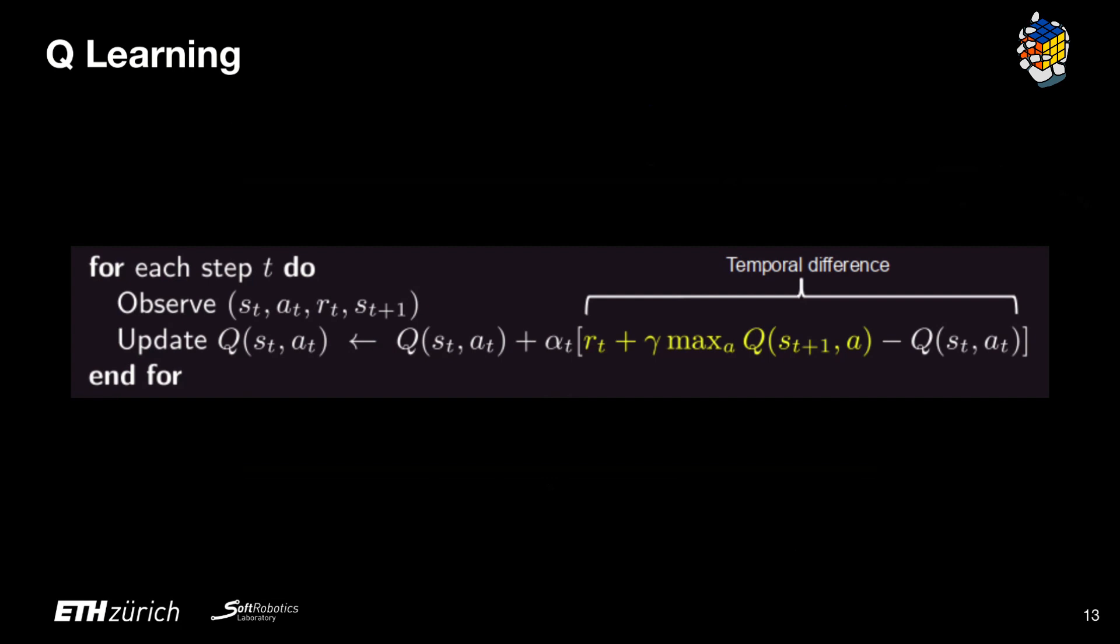This algorithm is defined as an off-policy algorithm since it allows to firstly record all the transitions and then perform the Q value estimate updates. On the other hand, an on-policy algorithm needs to use the current most up-to-date policy to collect the data that updates the policy.